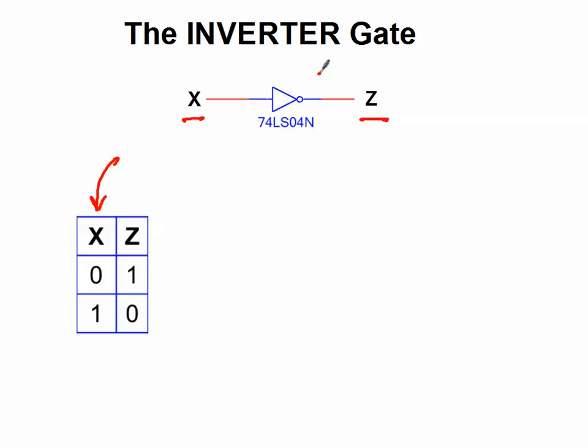And what you'll notice is, this little circle here is a common symbol that we'll use throughout digital electronics to mean a negative or an inverse in different applications. So the way we would write the logic expression for the inverter gate, Z equals not X, with a bar over the X.